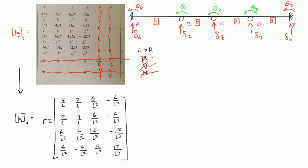Notice that on the main diagonal there are no zeros and no negative signs, which means we're doing things correctly. Also notice that this matrix is symmetrical about the main diagonal. In this video we set up the degree of freedom diagram and discussed the stiffness matrix. In the next video we'll start building the stiffness matrix for each of the four elements, which is where things get a bit tedious, but we'll run through the entire problem step by step.